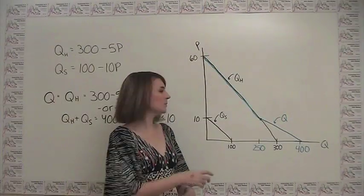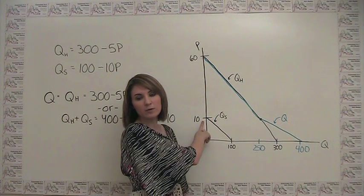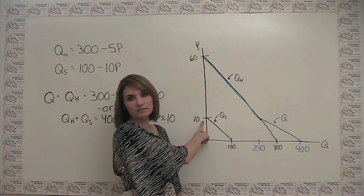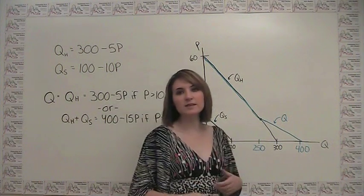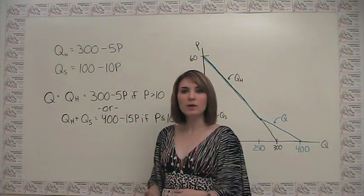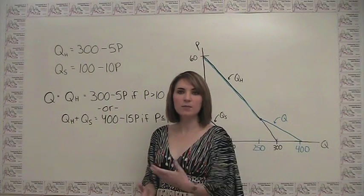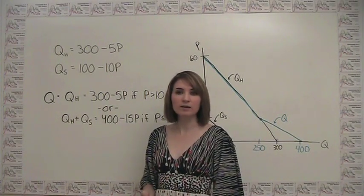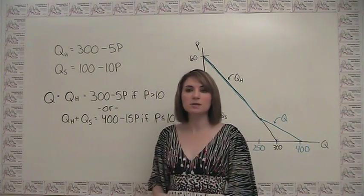You'll notice that the maximum that sad people are ever willing to pay is 10. So you'll notice that for prices that are greater than 10, we only have happy people buying. At prices lower than 10, we have both happy people and sad people buying. And we need to account for this when we're doing our horizontal addition.